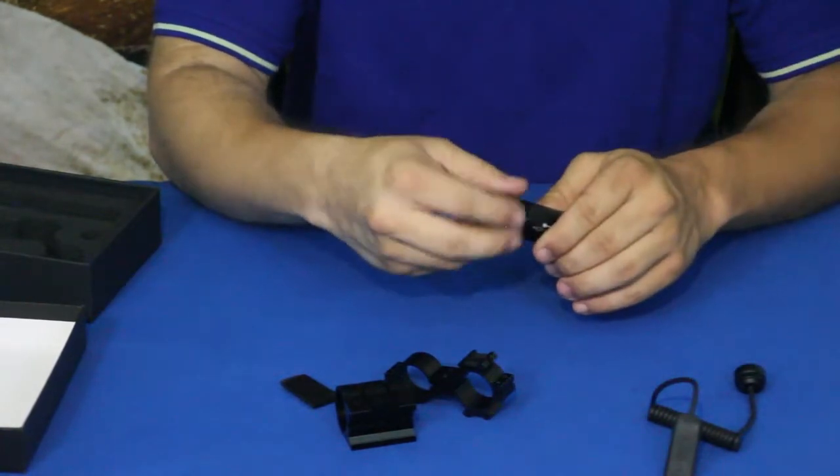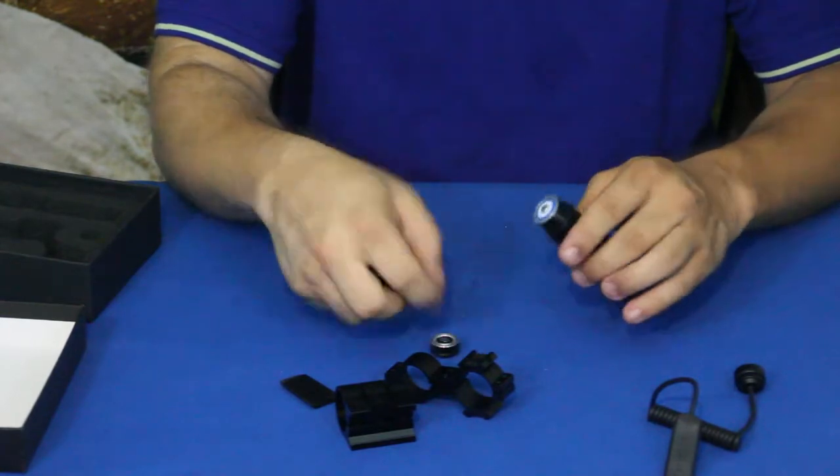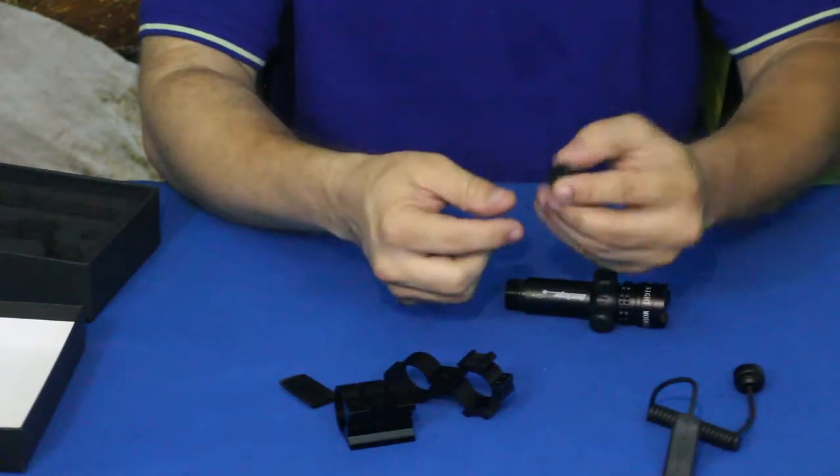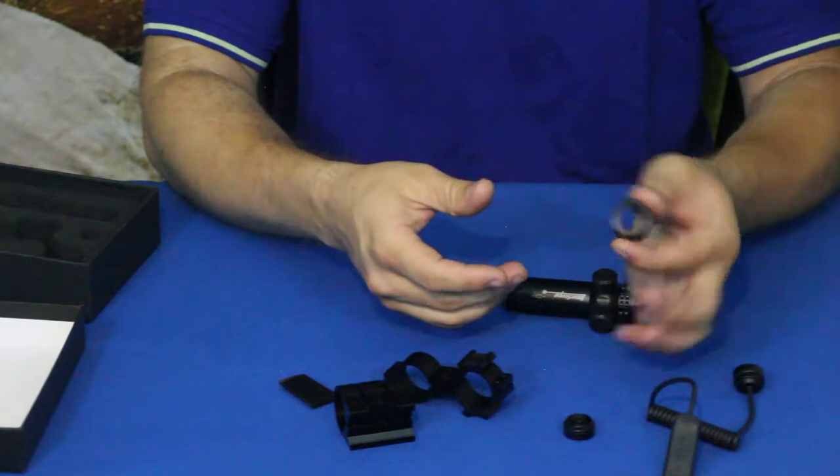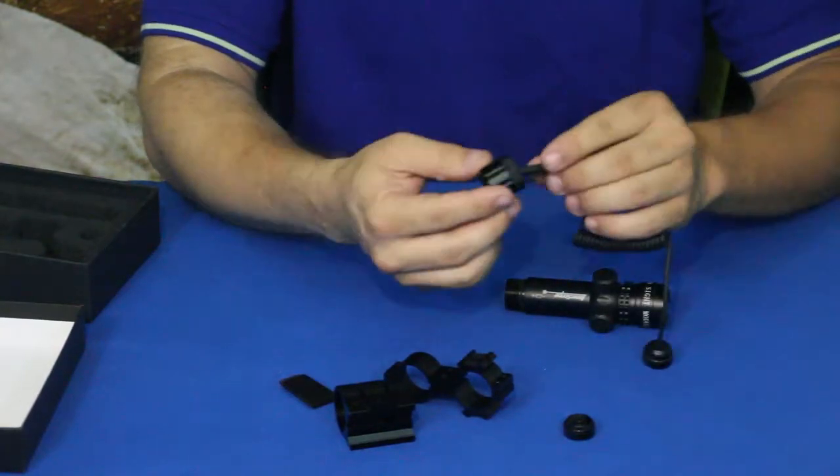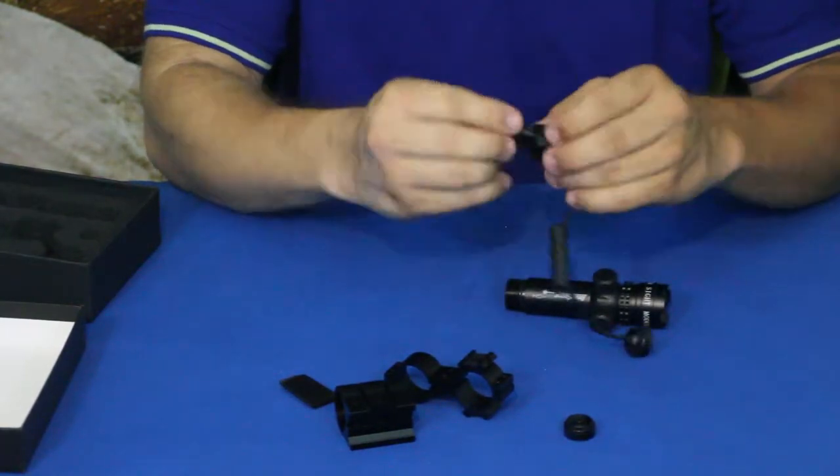The way this works with the thumb piece - the button itself is kind of separate and you've got basically the nut. So you slide that through there.